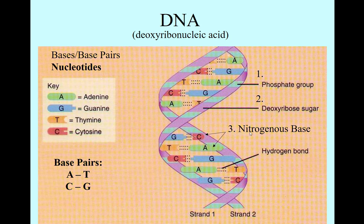Now, these have multiple names: nitrogenous bases. Sometimes they're called bases, sometimes they're called base pairs, because they're always paired up together. And sometimes they're simply called nucleotides. Now, technically, a single nucleotide is made up of one nitrogenous base, one phosphate group, and one sugar group. So this right here is technically a nucleotide.